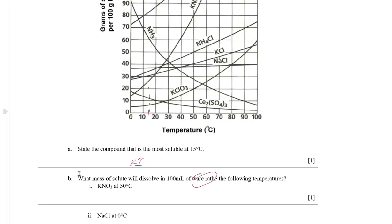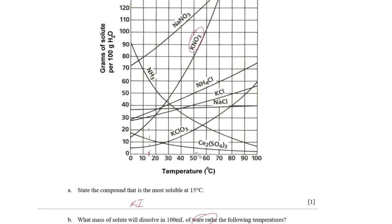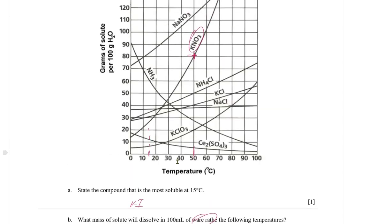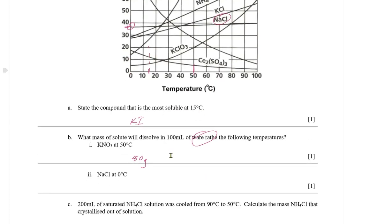What mass of solute dissolves in 100 mL for the following temperatures? Potassium nitrate at 50°C: find potassium nitrate on the graph, go to 50°C, follow across — we get 80 g (don't forget units). Sodium chloride at 0°C: an interesting thing about sodium chloride is that the amount that dissolves is barely affected by temperature, though the rate at which it dissolves is affected — many people confuse these two.